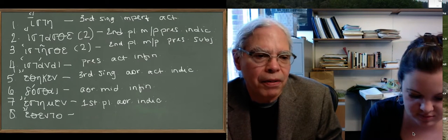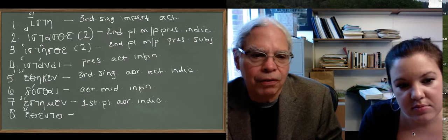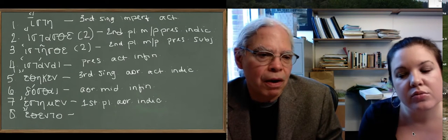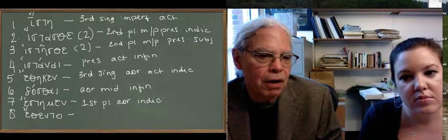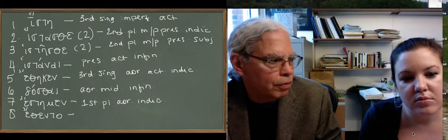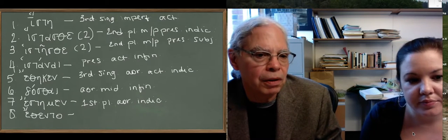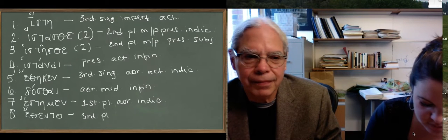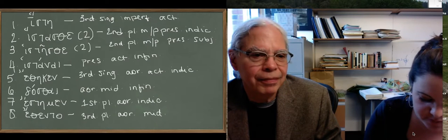Number eight, e, fen, ta. We have an augment, so we know it's a past tense. We have fe, which is an unreduplicated form, so we know it's an aorist. We have nta, which we know is a third person plural middle ending. So this is aorist, middle, third person plural. It's not hard, is it?